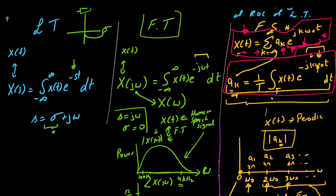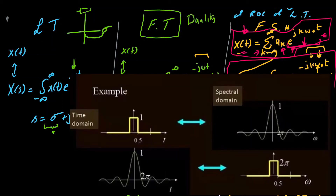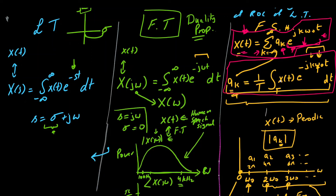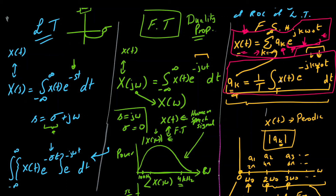Coming back to the Fourier transform, it has several useful properties compared to the Laplace transform — for example, the duality property, which gives diagonal relationships between time and frequency. For the Laplace transform, we may have a signal x(t) that is not converging by itself, but we multiply it by e^(−sigma*t) and set sigma so that it converges, after which we take the Fourier transform. Hence the Laplace transform exists for even those signals for which the Fourier transform does not exist, making it more generic in nature.